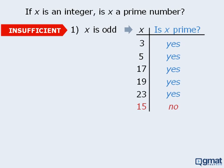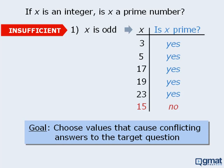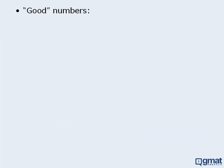As you have seen, the table method is useful when we suspect that a statement may be insufficient. More importantly, the table method will only yield conclusive results if we are able to choose numbers that yield different answers to the target question. So when you are choosing numbers for your table, your goal should be to choose numbers that will cause conflicting answers to the target question. To accomplish this, we want to choose good numbers. So, what are good numbers? Good numbers are numbers that represent a nice cross-section of all numbers.